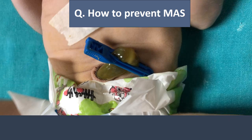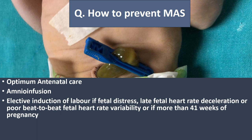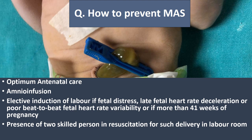How do we prevent meconium aspiration syndrome? Optimal antenatal care should be provided to the mother. Amnioinfusion — in which normal saline is injected into the amniotic fluid to dilute meconium-stained amniotic fluid — has a controversial role. Elective induction of labor is indicated if there is fetal distress, late fetal heart rate deceleration, poor beat-to-beat fetal heart rate variability, or if pregnancy is beyond 41 weeks. At least two skilled persons should be present in the labor room at the time of delivery.